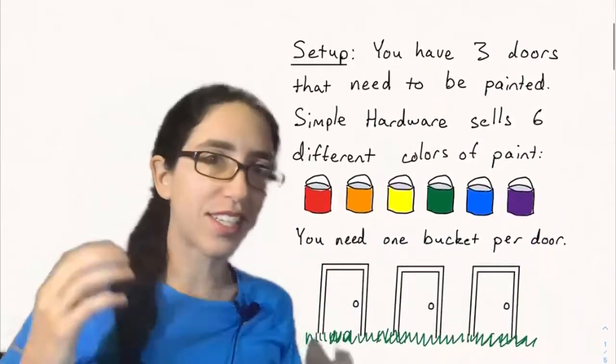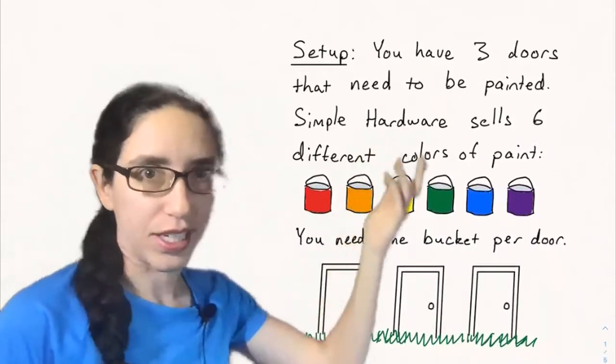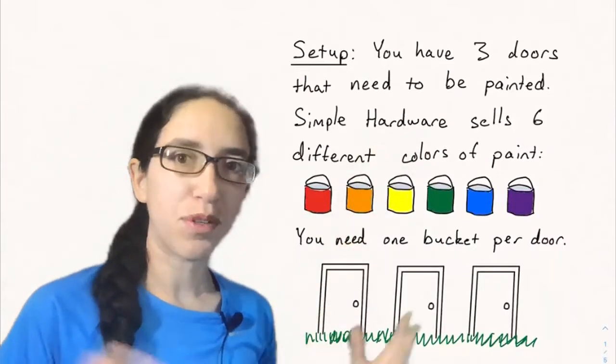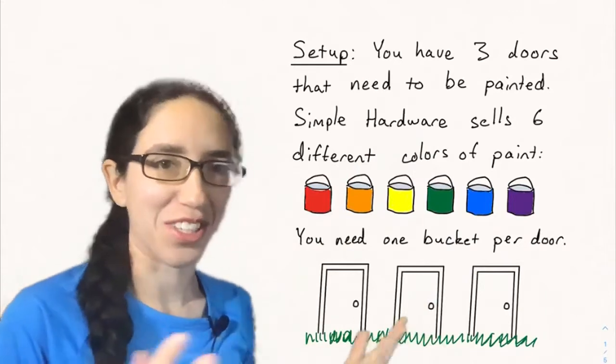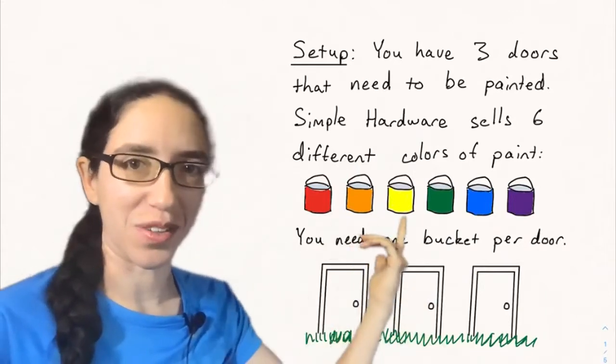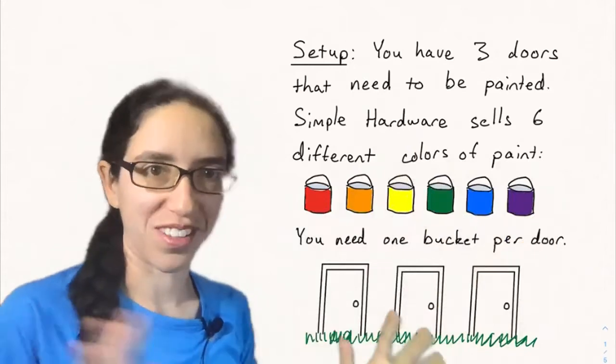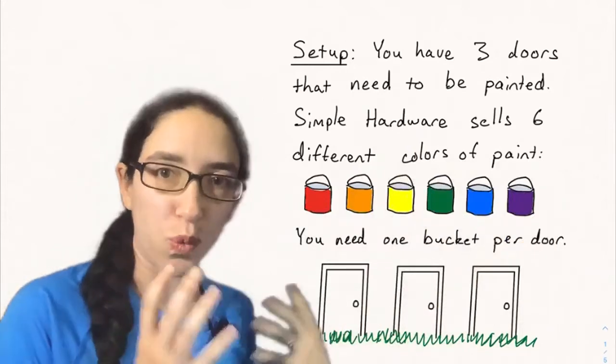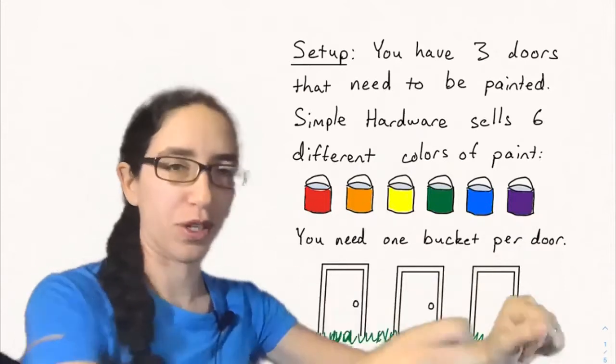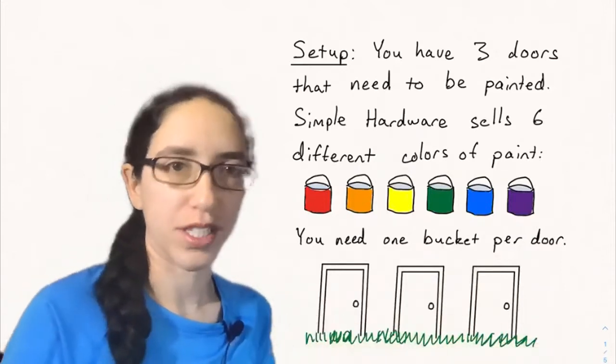So let's consider the following setup. Say you have three doors that need to be painted and the simple hardware store sells only six different colors of paint: red, orange, yellow, green, blue, and violet. So just the colors of a rainbow. Very simple hardware store. They don't have different shades. And say you need one bucket per door. So when you go to the hardware store you're going to buy buckets of paint, one for each door, that's the amount of paint you need.